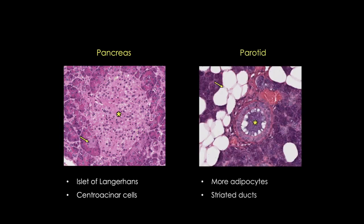You should now be able to better recognize the pancreas by the islets of Langerhans and the central acinar cells, and contrast them to the increased amount of adipose tissue and the striated ducts of the parotid gland. I hope these tips will help you solve this case of mistaken identity. Thanks for stopping by — be sure to check out my other cases of mistaken identity.